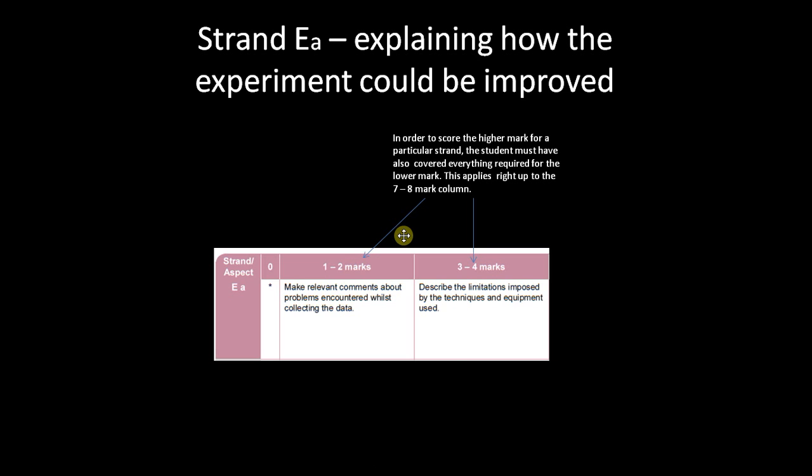Now with strand EA you need to recognize the limitations imposed by your techniques and by your experiment. A good example would be in an experiment where you are using pond weed to carry out photosynthesis. So imagine the pond weed in a beaker of water, you might have a bench lamp, and you have to count the number of bubbles of oxygen produced in a minute. Now a big limitation is that with the bright conditions there might simply be too many oxygen bubbles for you to count.